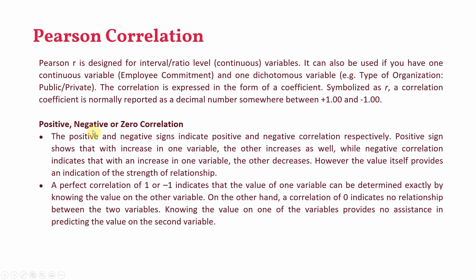Regarding positive, negative, or zero correlation: the positive and negative signs indicate positive and negative correlation respectively. A positive sign shows that with an increase in one variable, the other increases as well — just as we saw in the example where if social responsibility increases, the reputation of the organization in the community would increase. Negative correlation indicates that with an increase in one variable, the other decreases — like with an increase in pay, absenteeism would decrease. The value itself provides an indication of the strength of the relationship.